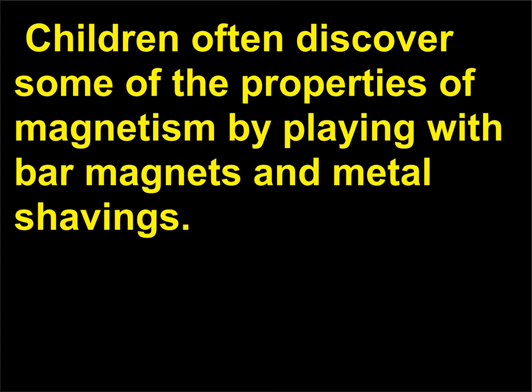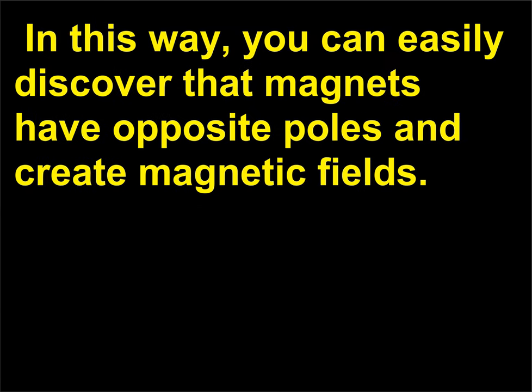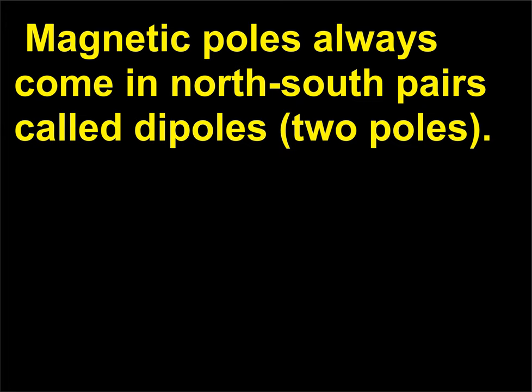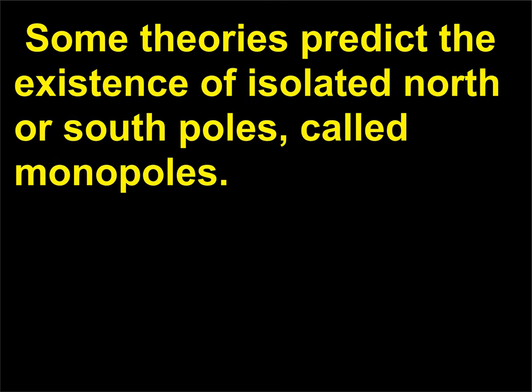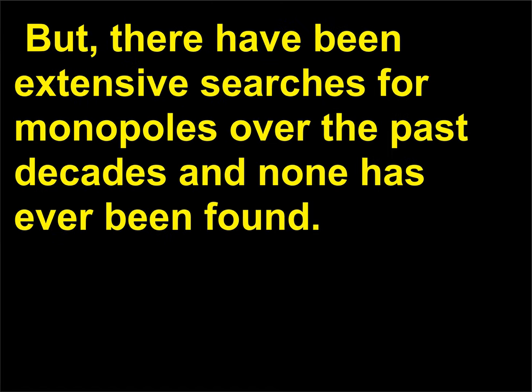Children often discover some of the properties of magnetism by playing with bar magnets and metal shavings. In this way, you can easily discover that magnets have opposite poles and create magnetic fields. Magnetic poles always come in north-south pairs called dipoles. Some theories predict the existence of isolated north or south poles, called monopoles, but there have been extensive searches for monopoles over the past decades and none has ever been found.